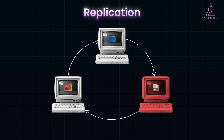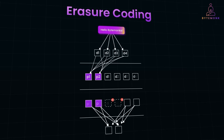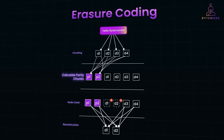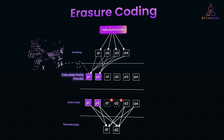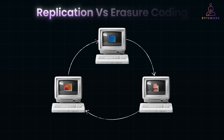A better approach is erasure coding. Check out my video on erasure coding, where I explain it with simple code examples and its benefits over replication. However, choosing between replication and erasure coding depends on your system's fault tolerance strategy.